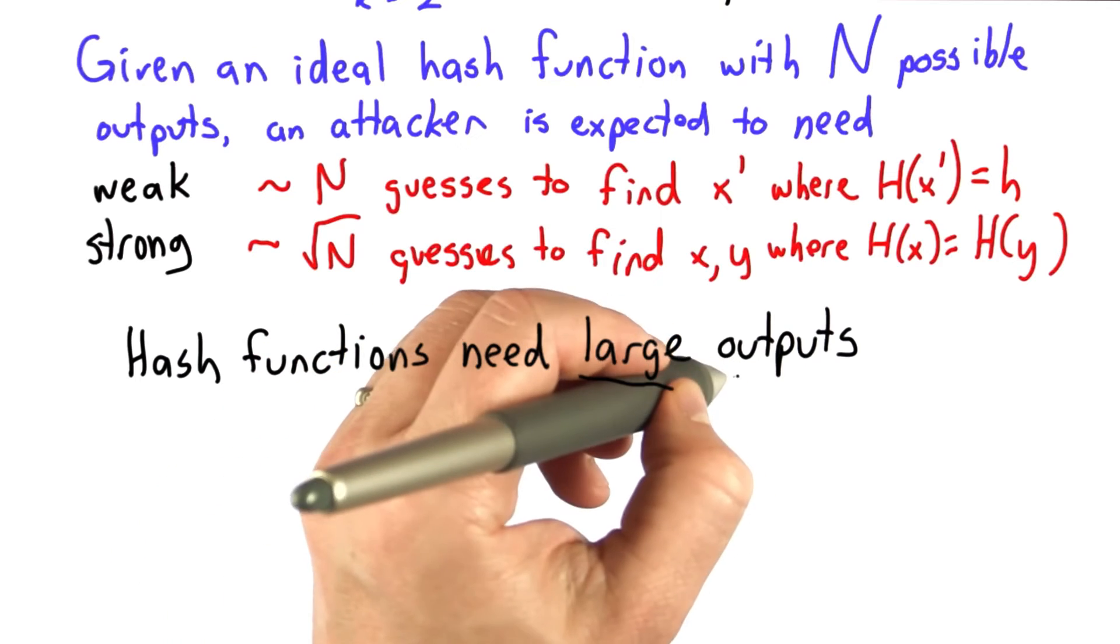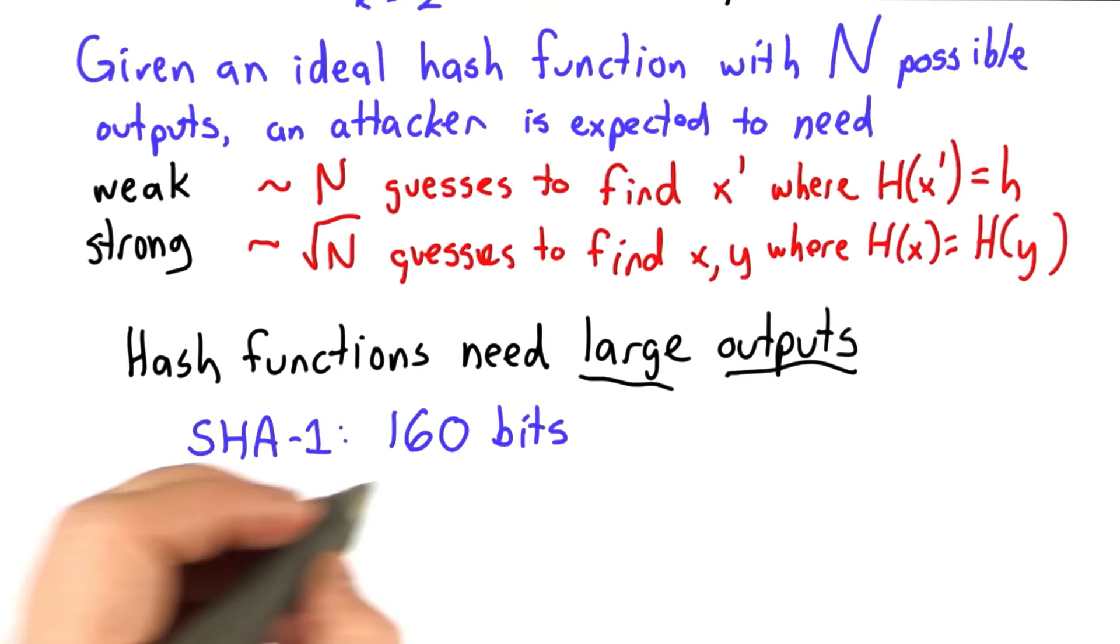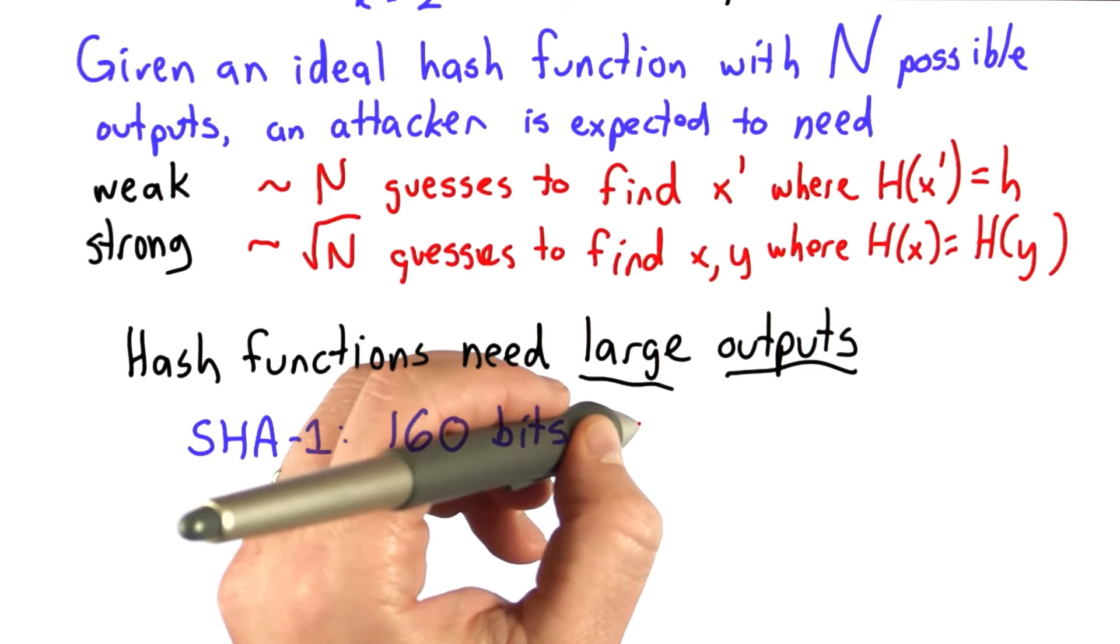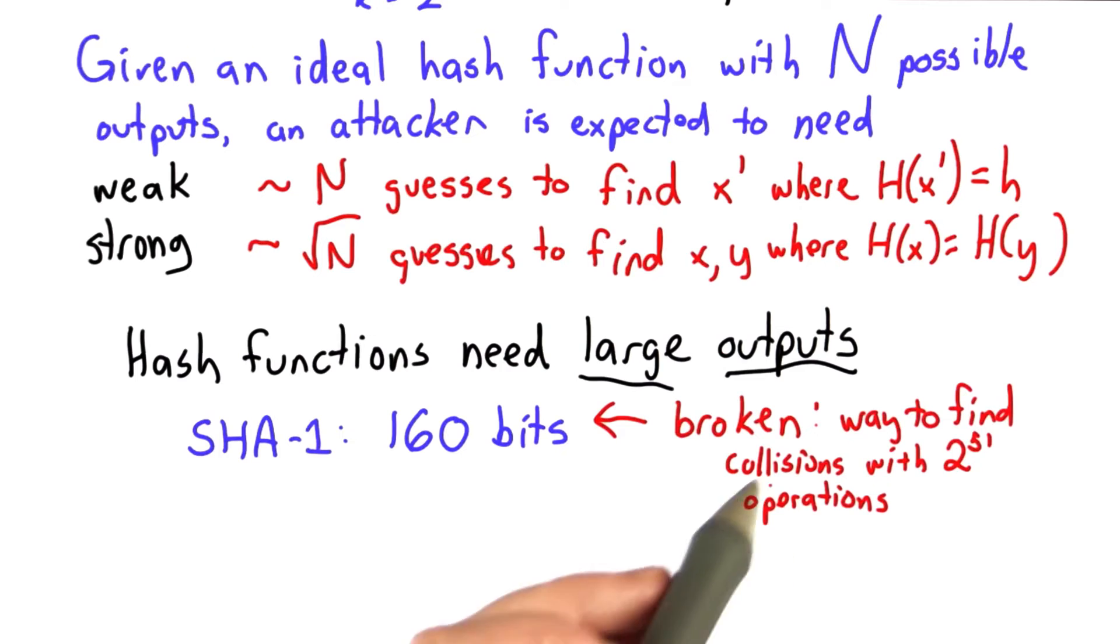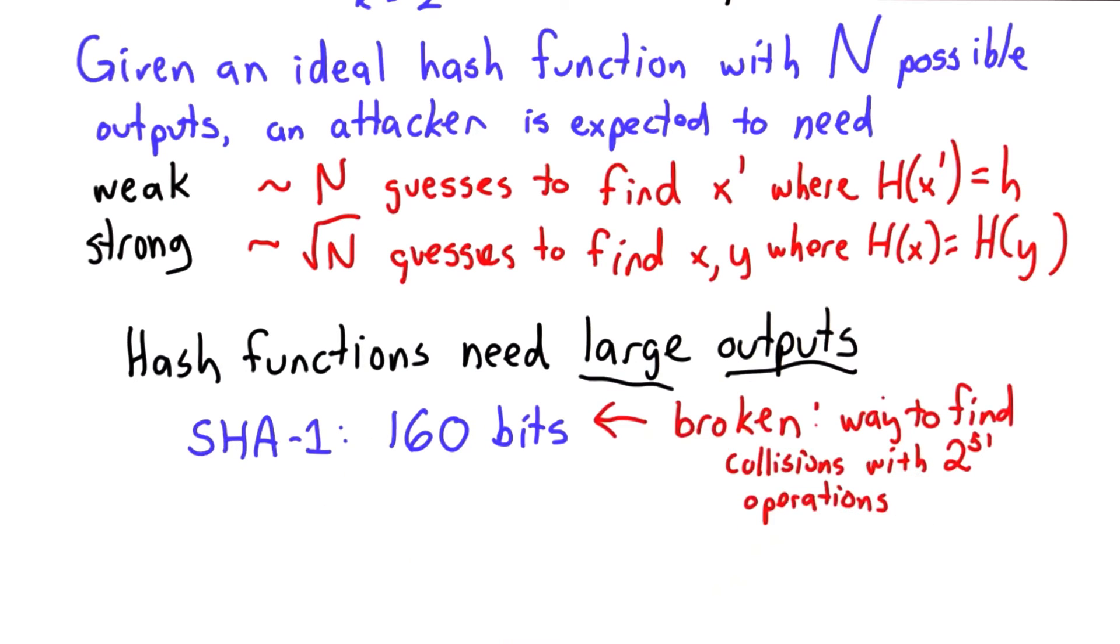And this is the reason why hash functions need to have large outputs. SHA-1, which was a widely used hash function, used 160 bits in its output. This is actually broken. There's a way to find collisions using SHA-1 with only 2 to the 51 operations, much fewer than the 2 to the 80 that one would expect from the square root estimate. And that's because of mathematical weaknesses in the way SHA-1 works.